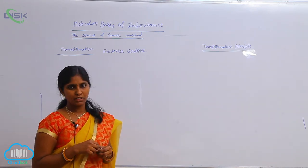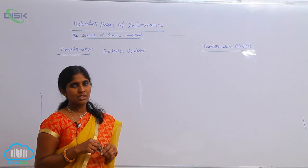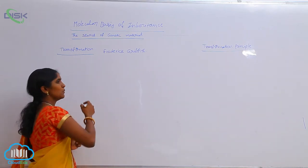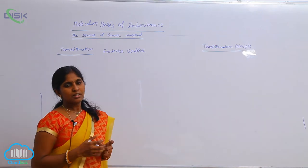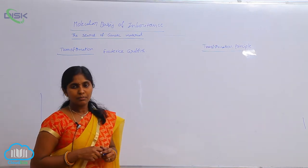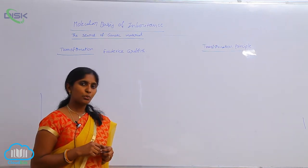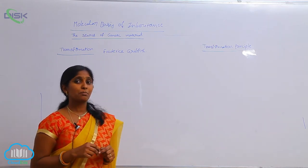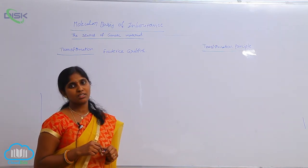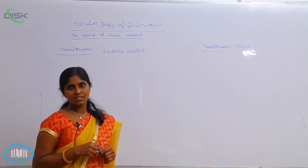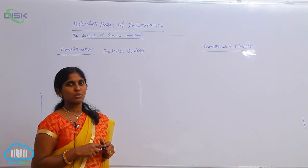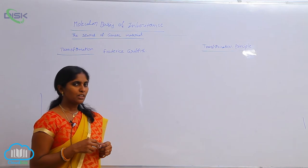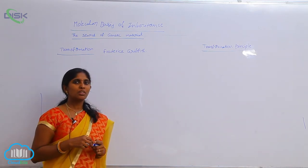For his experiment, he selected the bacterium Streptococcus pneumoniae. Streptococcus pneumoniae is a bacterium that caused the disease septicemia in rats and also caused pneumonia in human beings.